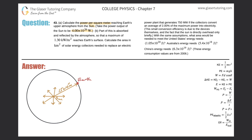So what we need to do is calculate the power per square meter — essentially the watts per meter squared. This is the same thing as saying power per square meter, and these are the units that we want to get.